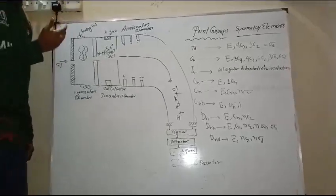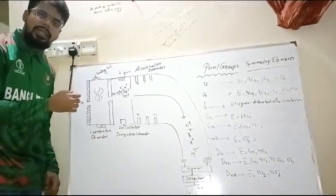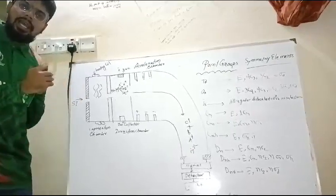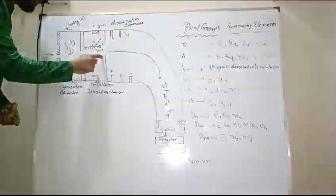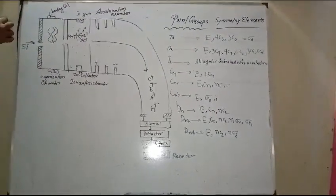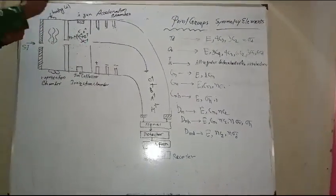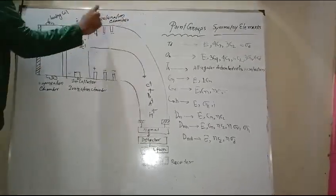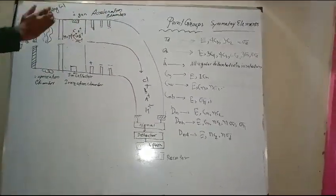When you use a higher amount of energy — approximately 17 electron volts — you get fragmented ions. These fragmented ions then move forward into the acceleration chamber.